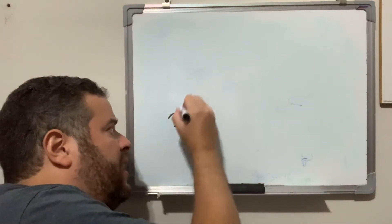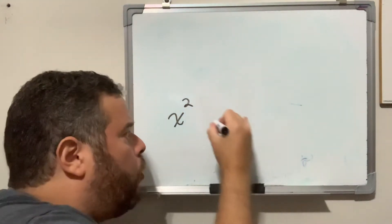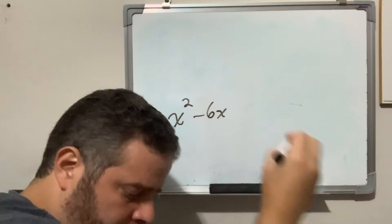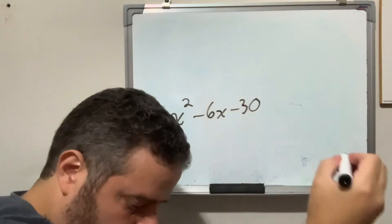Now difference, let's go over the first example, example one. If this were an equality, if this were an equality, just give me one second.